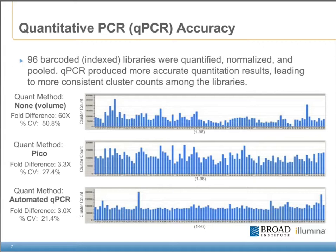First, the libraries were normalized and pooled based on the quants given by the Agilent Bioanalyzer. This was almost like loading the libraries blindly onto a flow cell. As we expected, the cluster counts were low and very inconsistent. We then used a pico-green assay for quantification. This produced cluster counts that were much higher; however, there was a lot of inconsistency, because pico-green quantifies all DNA fragments in the sample, not just the fragments that are going to amplify on the flow cell. Finally, we used our automated qPCR quant result to pool the libraries. This method gave us some of the most consistent results. There were a few outliers, but overall the number of clusters coming from each library was very consistent.